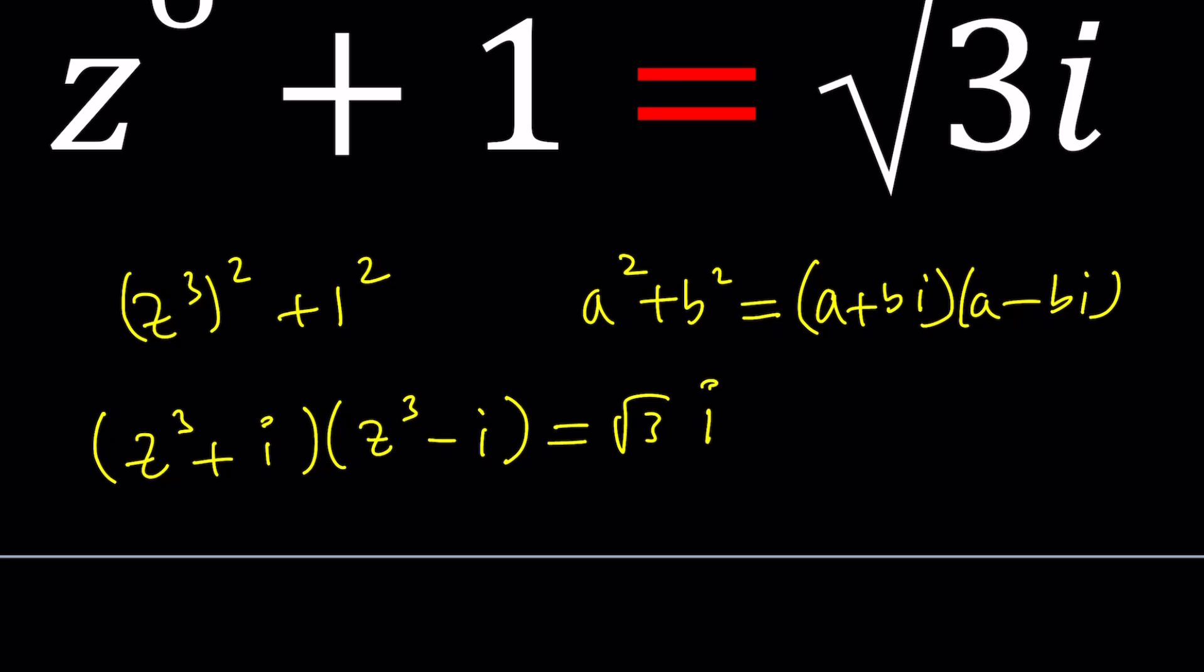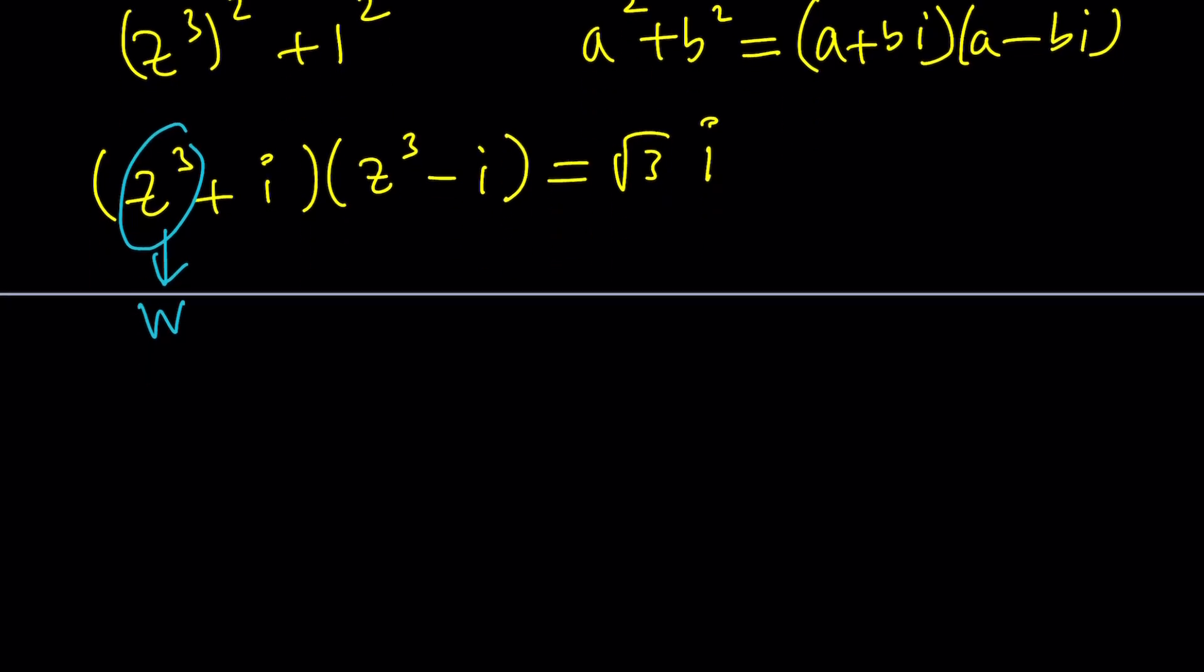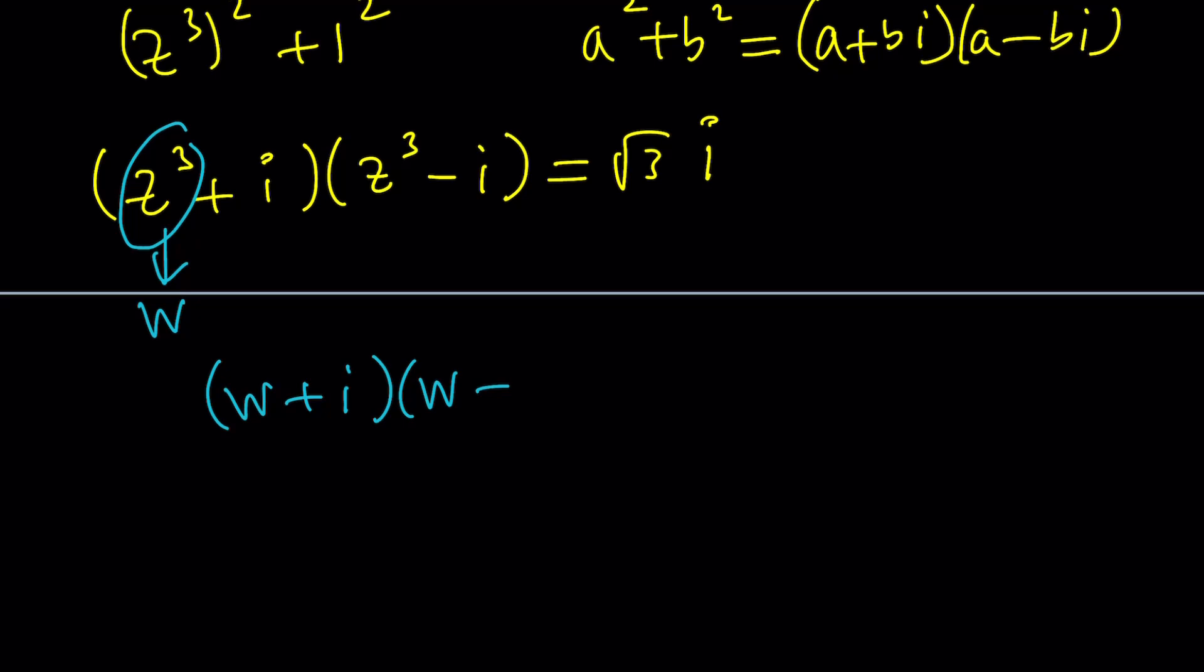So if you apply that, you're going to get z cubed plus i and z cubed minus i equals square root of 3 times i. Is this really going to work? I think so. I just wanted to give it a try and looks like it's going to work because we can use substitution.